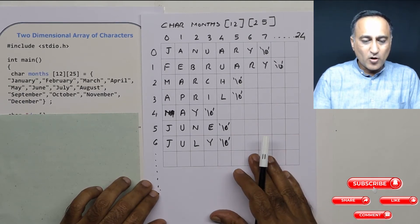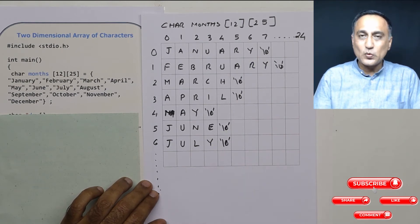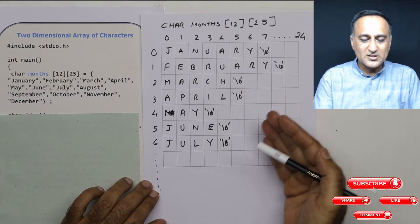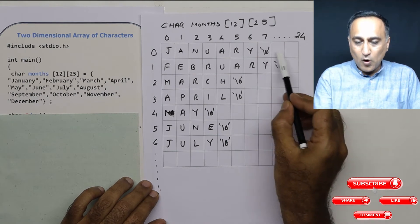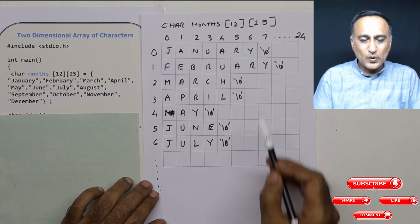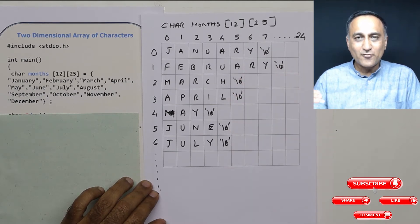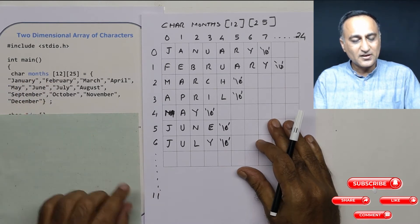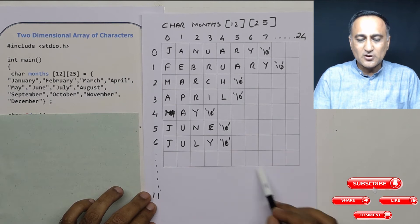One thing you may have observed is that the length of all these strings is quite different. The length of January is different from March, March is different from May, and May is different from July. All this extra space is wasted when using a two-dimensional array to store an array of characters, such as the months of a year. So there is a lot of wastage of space.